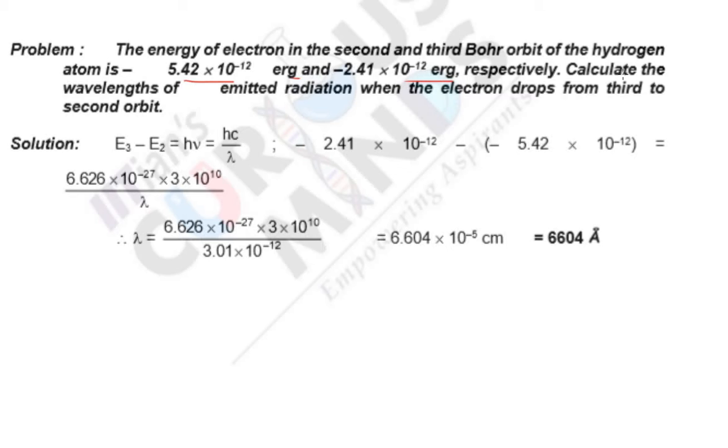It is common sense that if the electron is dropping from 3rd to 2nd orbit, energy is released. That's how you can say emitted radiation.